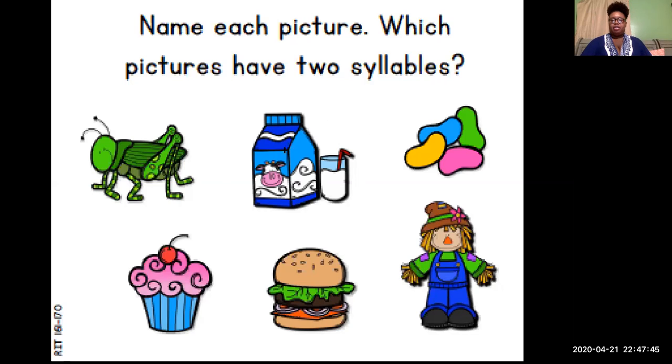Our next word here, this is a picture of milk. Let's clap that word out, milk. How many syllables is in the word milk? One, awesome job friends. Our next picture is a picture of some jelly beans. Let's go ahead and clap that word out. Jelly beans. How many syllables? Three syllables, good job friends.